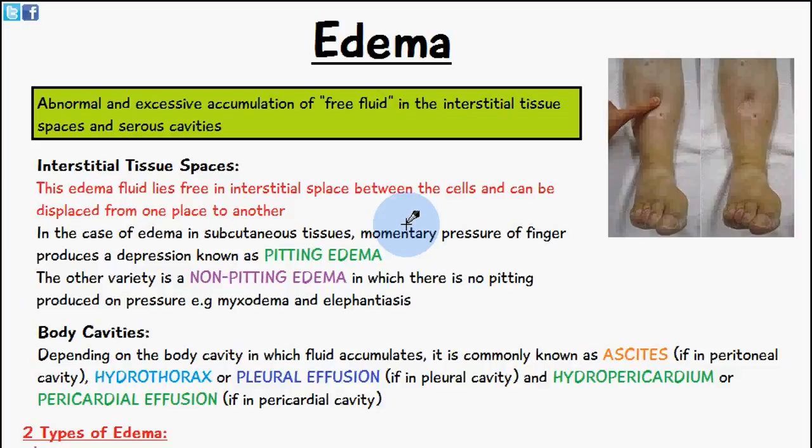This fluid can be displaced from one place to another. In the case of these kinds of edemas, if you put your finger over the swelling it produces a depression. You can see in the picture here on the right someone's put their finger on the leg and there's a little space which has been formed — this is called a pitting edema. But this is just one type; you can also get a non-pitting edema where there wouldn't be any depression.